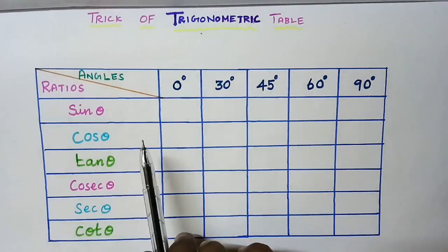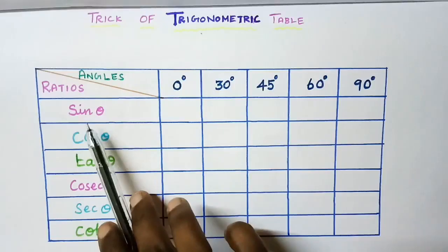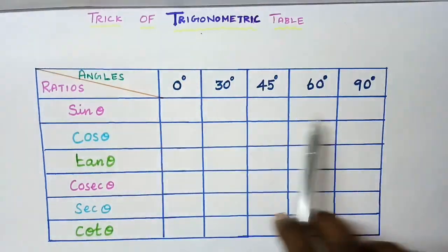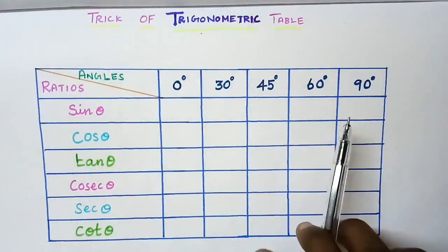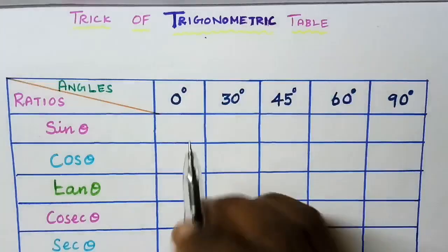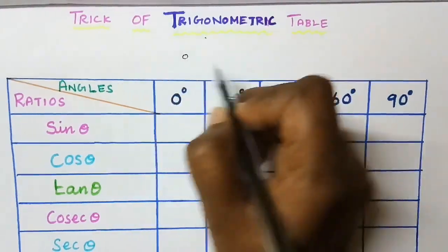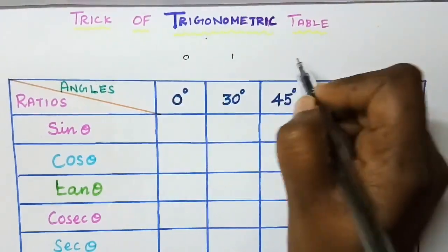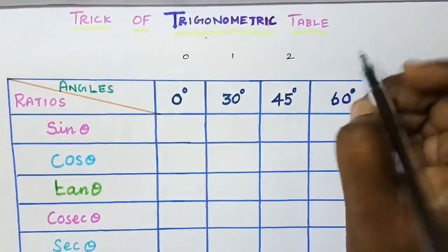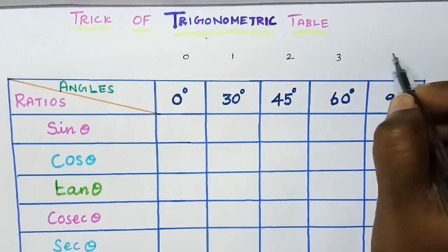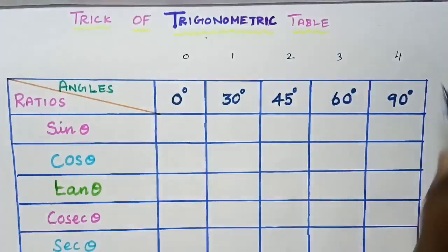First we are going to find out sin theta values — that is the first horizontal row. Just write the numbers from 0 to 4 in order: 0, 1, 2, 3, 4.